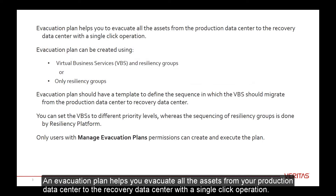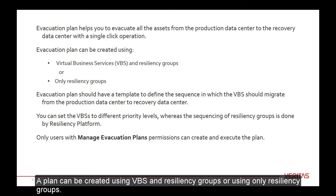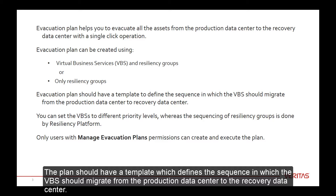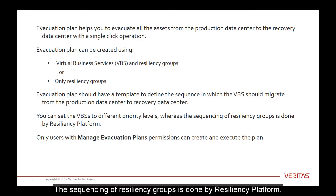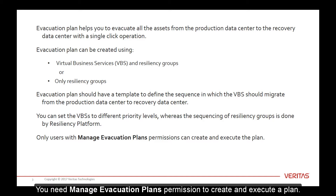An evacuation plan helps you evacuate all the assets from your production data center to the recovery data center with a single click operation. A plan can be created using VBS and resiliency groups or using only resiliency groups. The plan should have a template which defines the sequence in which the VBS should migrate from the production data center to the recovery data center. The sequencing of resiliency groups is done by Resiliency Platform. You need Manage Evacuation Plan's permission to create and execute a plan.